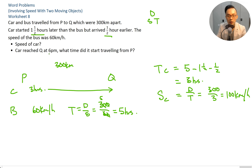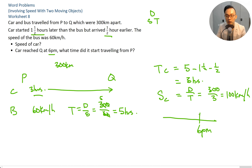The car reached Q at 6 p.m. What time did it start traveling from P? Draw a timeline: the car took 3 hours, so counting back 3 hours from 6 p.m. gives 3 p.m. The car started at 3 p.m., and its speed was 100 kilometers per hour.